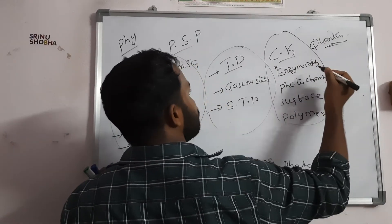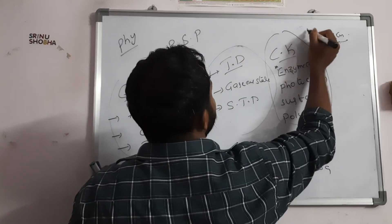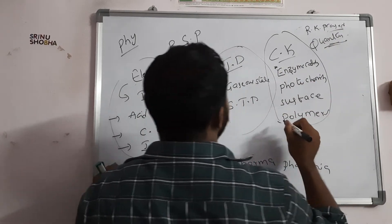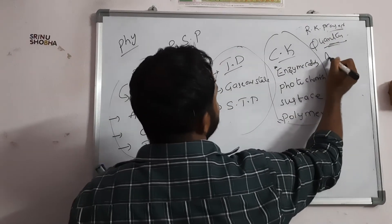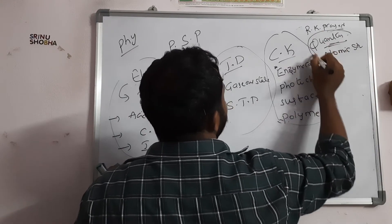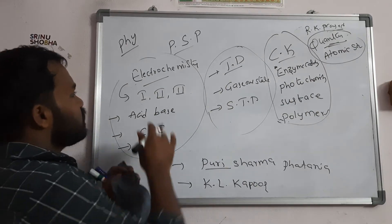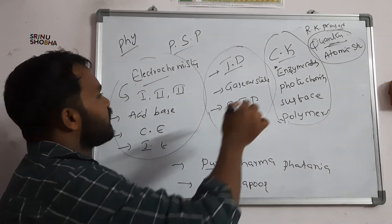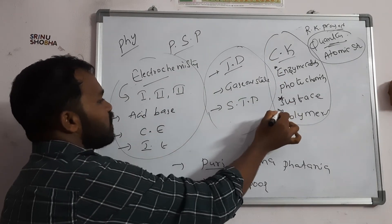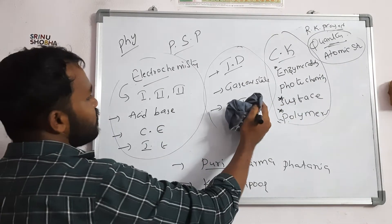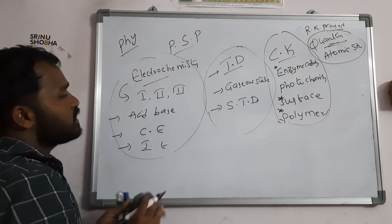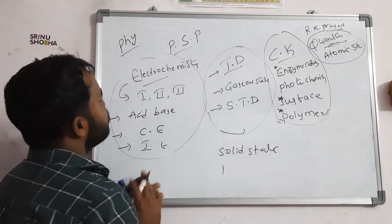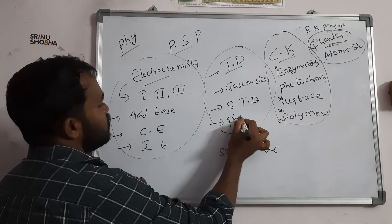For quantum chemistry, R.K. Prasad's book is good — it has a problems approach. Prepare atomic structure at an advanced level. Almost all topics are covered in Puri Sharma Pathania. The must-follow topics are enzyme catalysis, surface chemistry, polymers, and statistical thermodynamics — they focus on these most of the time. Also cover solid state and phase rule under thermodynamics.